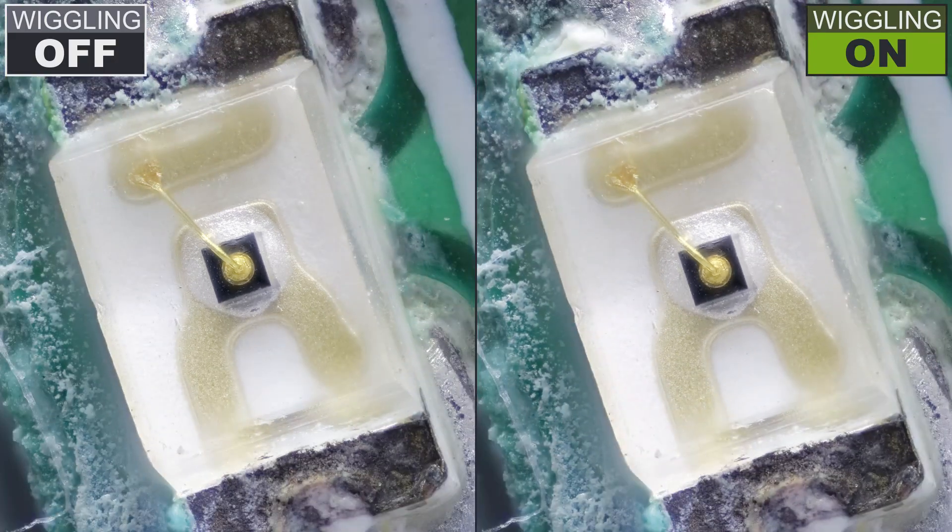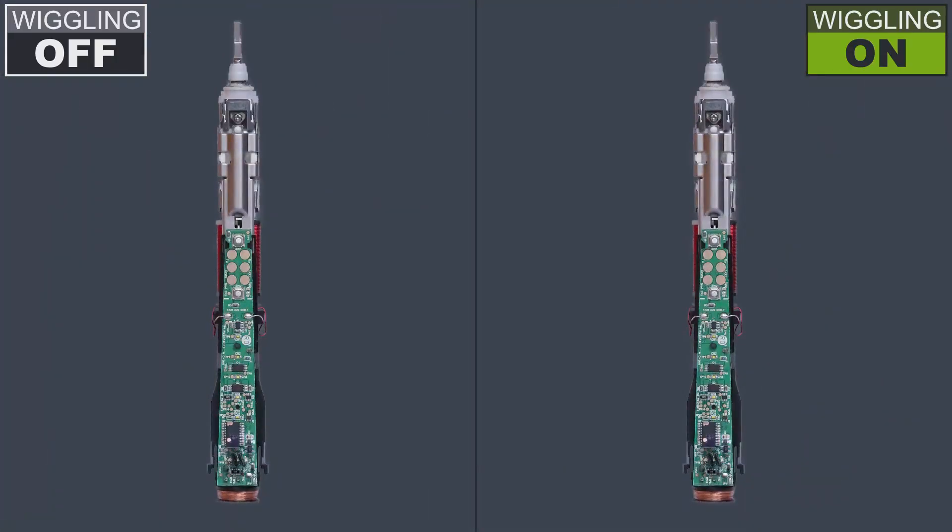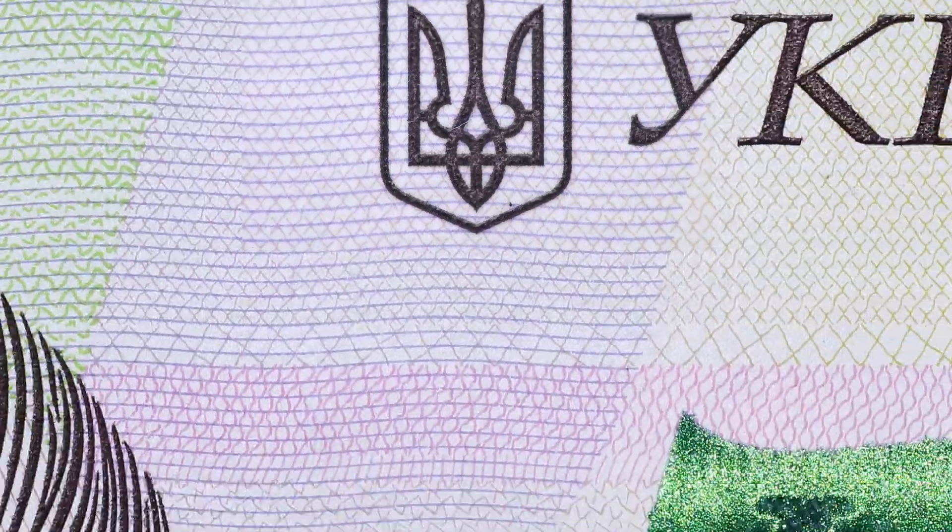No AI, no CGI, all real macro photography. Here is another example of raised printing on a Ukrainian 500 banknote. It is really this high, so you can feel it with your finger. No exaggerations.